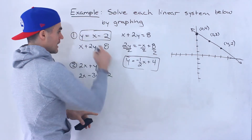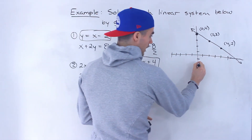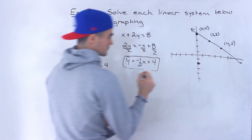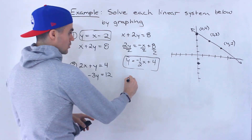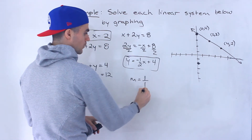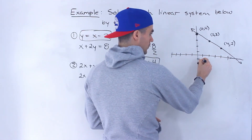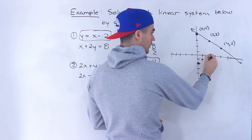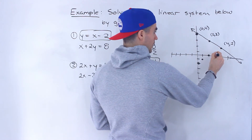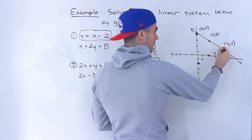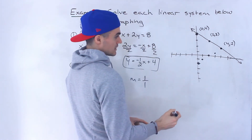And then this line, y equals x minus two — the y-intercept would be at negative two. The slope is one, which is like one over one, so it's just going to rise up by one, run one, rise up by one, run one, rise up by one, run one, rise up by one, run one. Notice that it's intersecting at four and two.